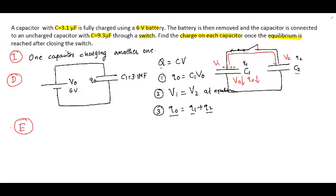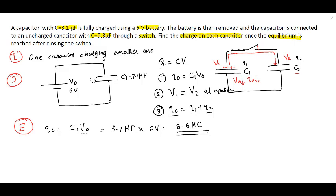First, the charge on the first capacitor when connected to the battery is found using Q0 equals C1 times V0, where V0 is the battery voltage. So that gives us 3.1 microfarad times 6 volts, giving 18.6 microcoulombs as the charge on the first capacitor when fully charged and before it is connected to the second capacitor.